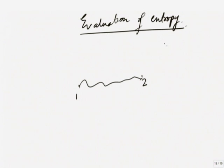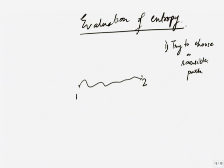If along a reversible path there is no dQ, then along any other reversible path dQ will be 0. As long as you know it is a reversible path, you know you are on the right track. Take any two points and try to choose a reversible path. You will realize that all reversible processes, if I want to integrate, will have to be quasi-static processes. This will necessarily be quasi-static.